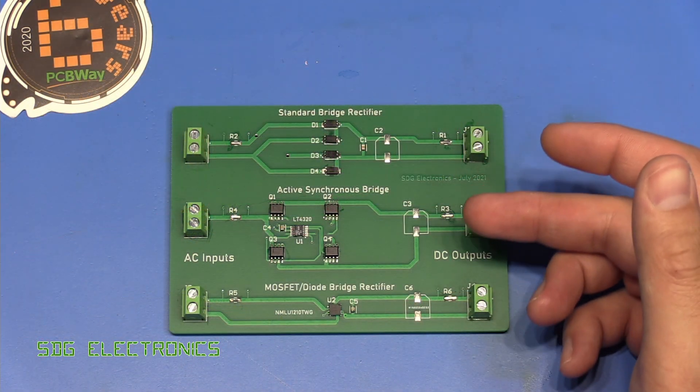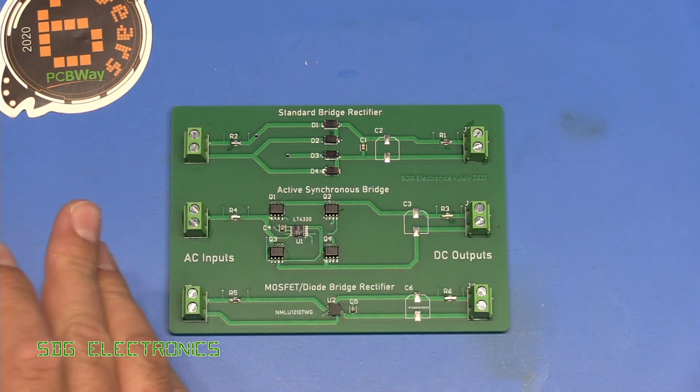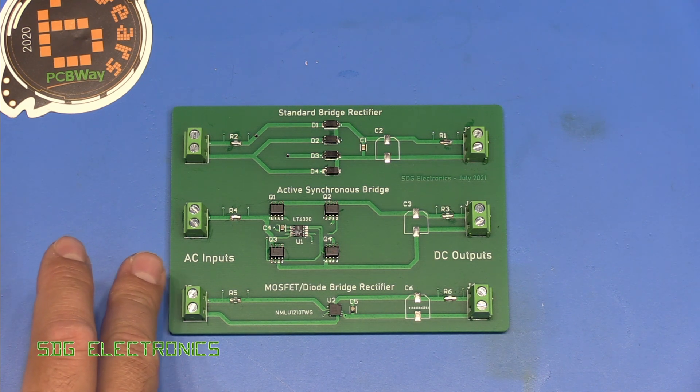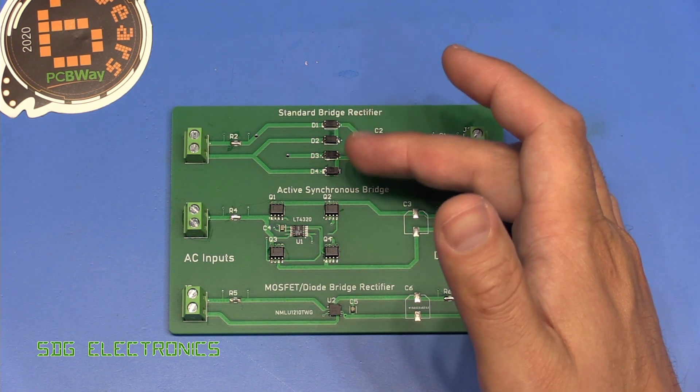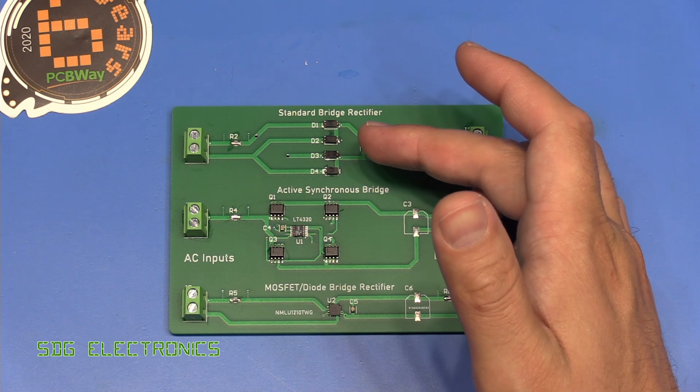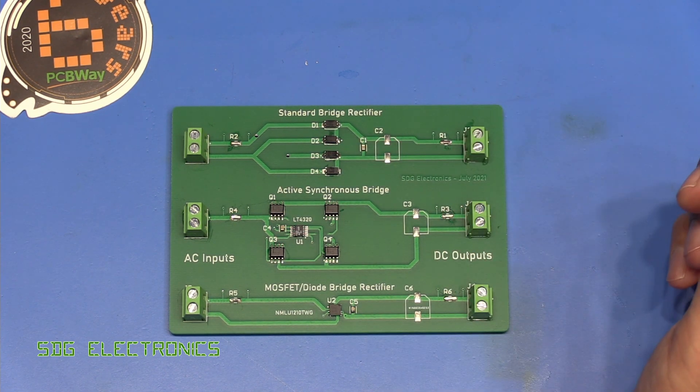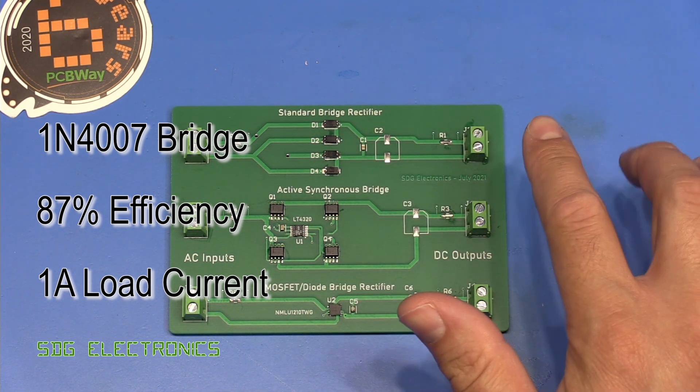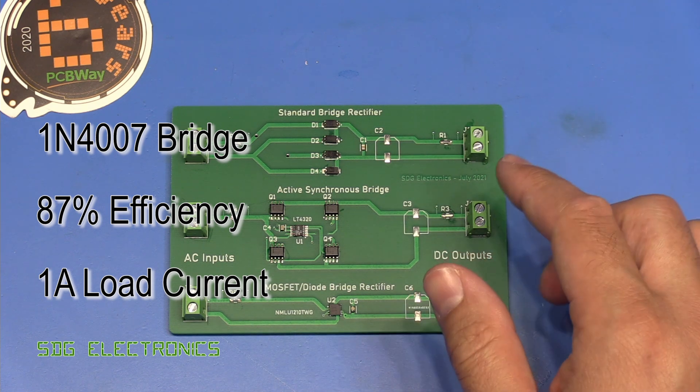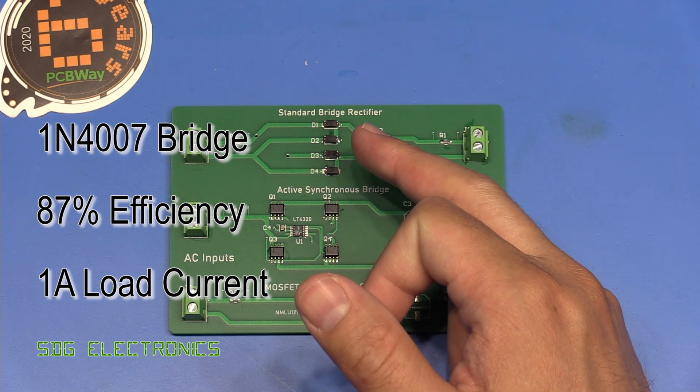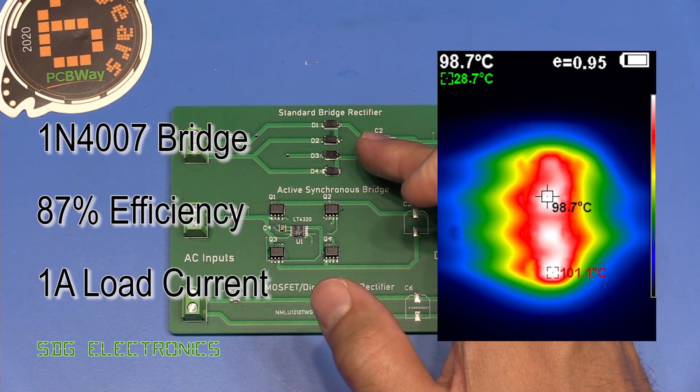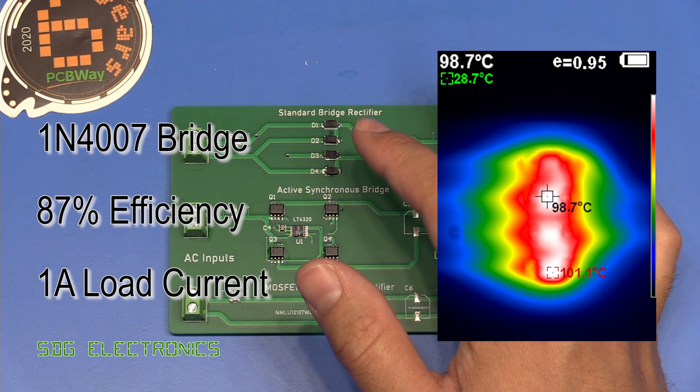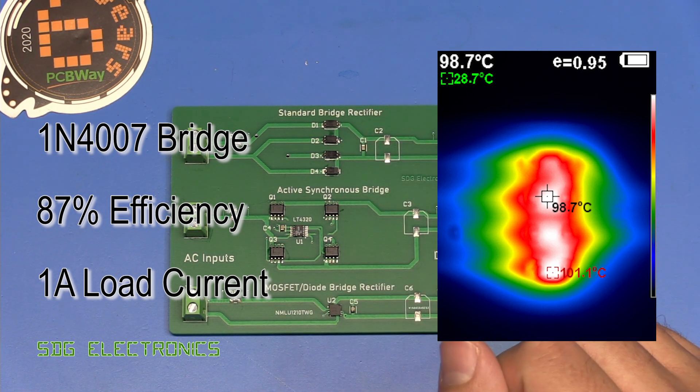So I ran each of the bridge rectifiers with the 12 ohm resistor and adjusted the input voltage so that we had a one amp RMS input current. This is about the maximum that we can drive these 1N4007 diodes at. And it gave us an efficiency of 87%. So that's 87% before any other kind of conversion that you might have in your typical application. So we're losing 13% of our power in these diodes. And as a result, these diodes were peaking at over 100 degrees C, so you're getting really quite toasty. But that is the maximum current that we can drive through these diodes.